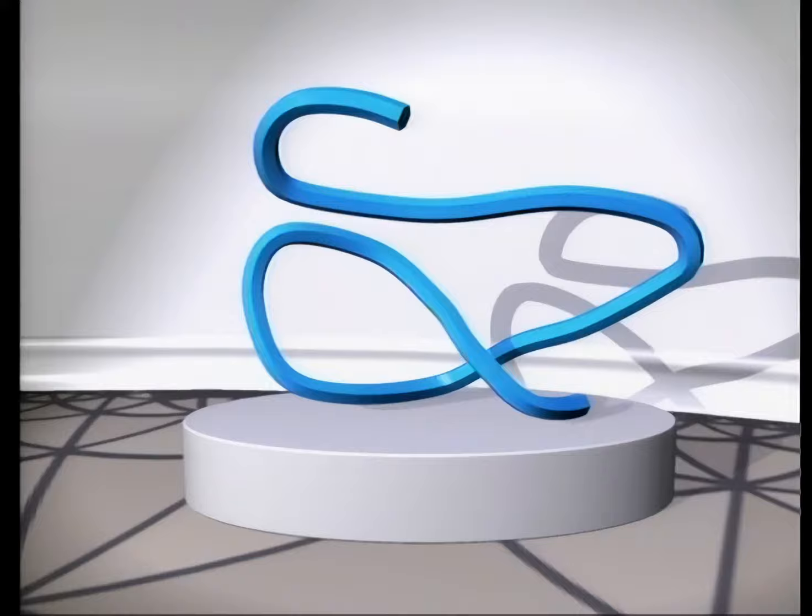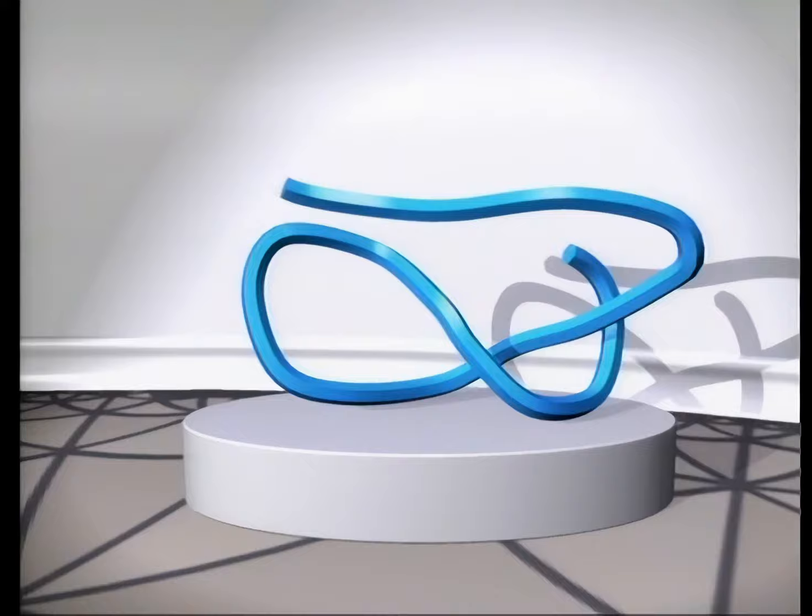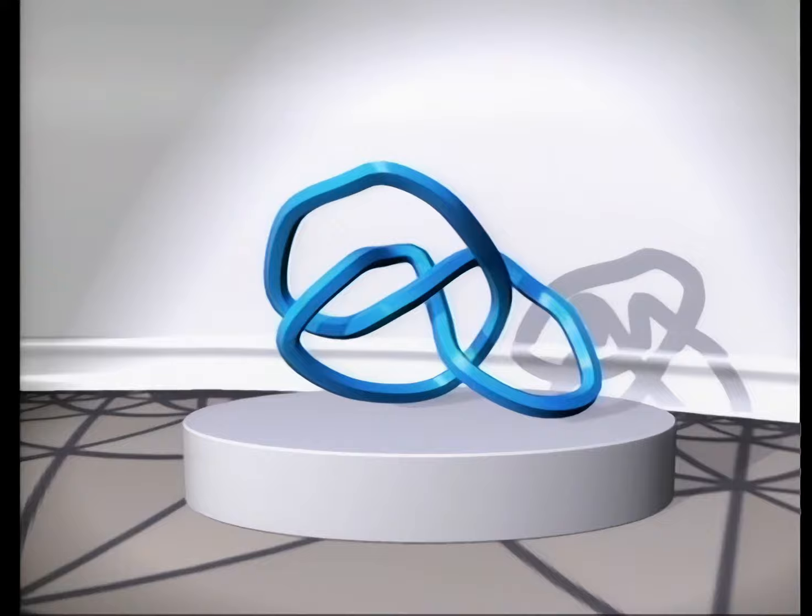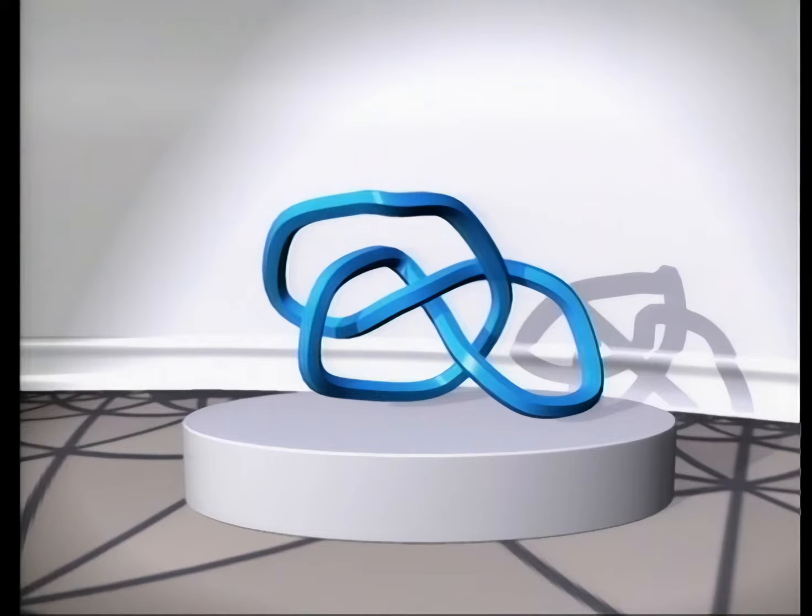Let's begin. This figure eight knot can be untied since its ends are free. From a mathematician's point of view, this knot is no knot at all. But if we join the ends to form a loop, we can no longer undo the knot without cutting it. Now that's a knot.